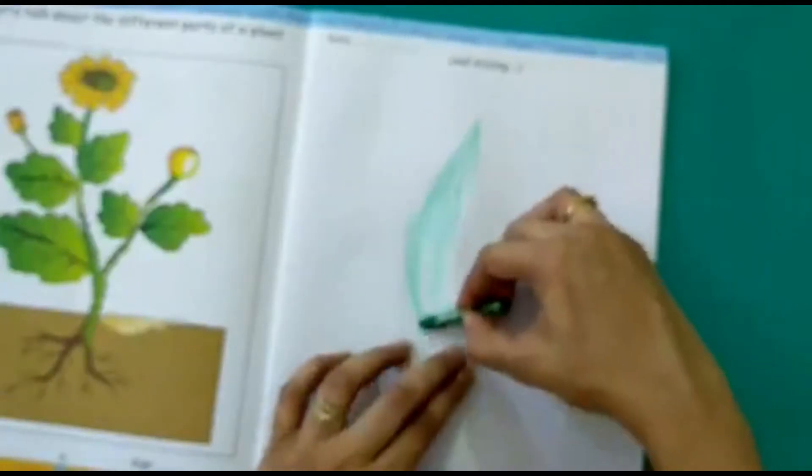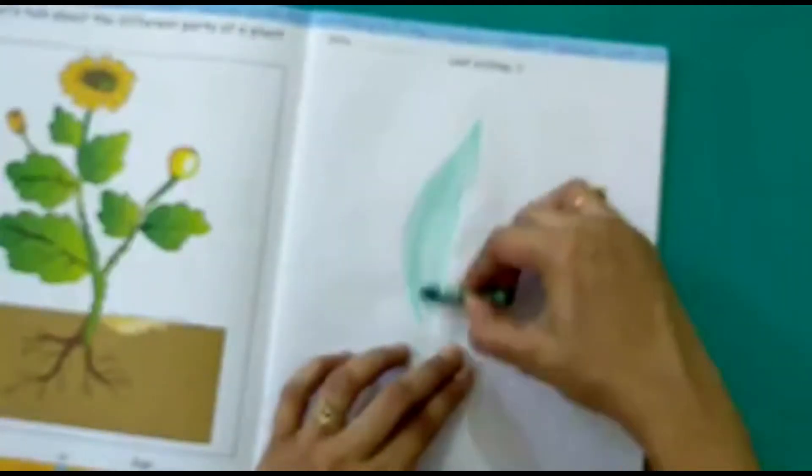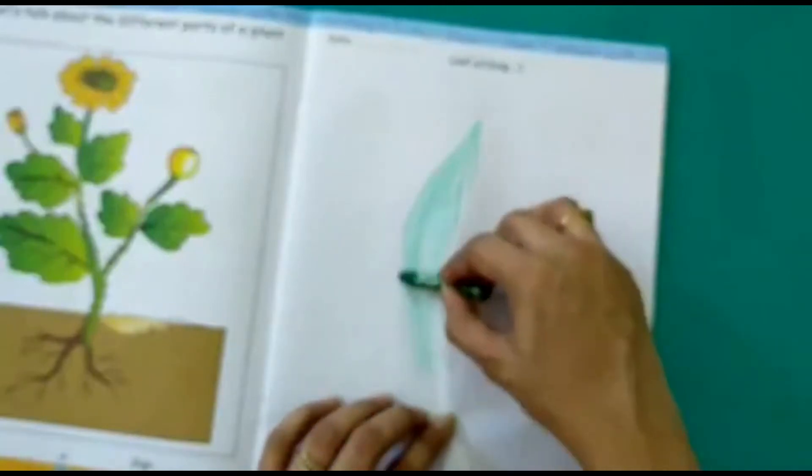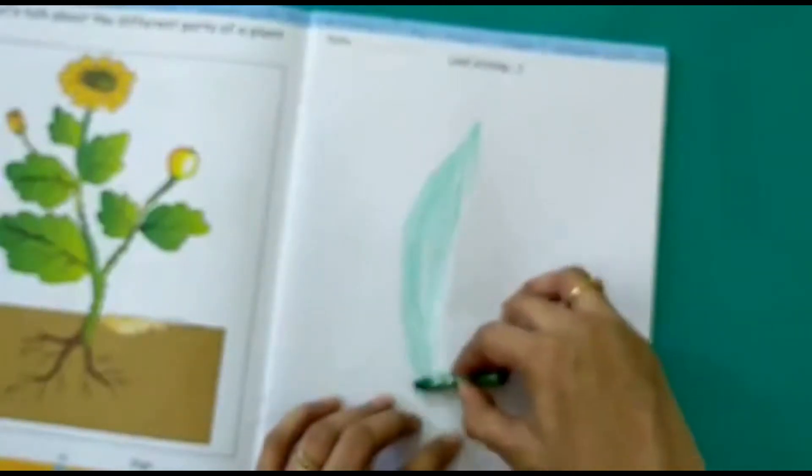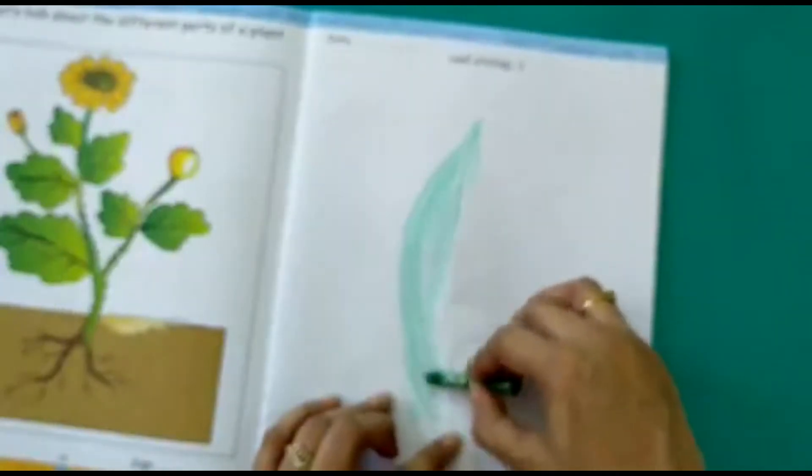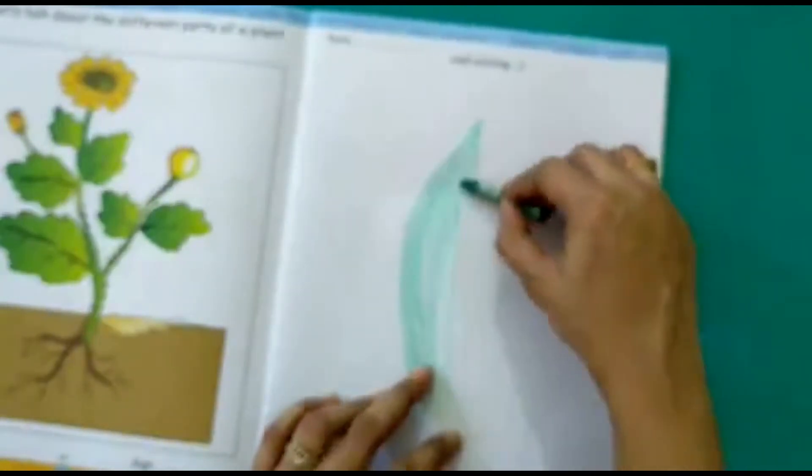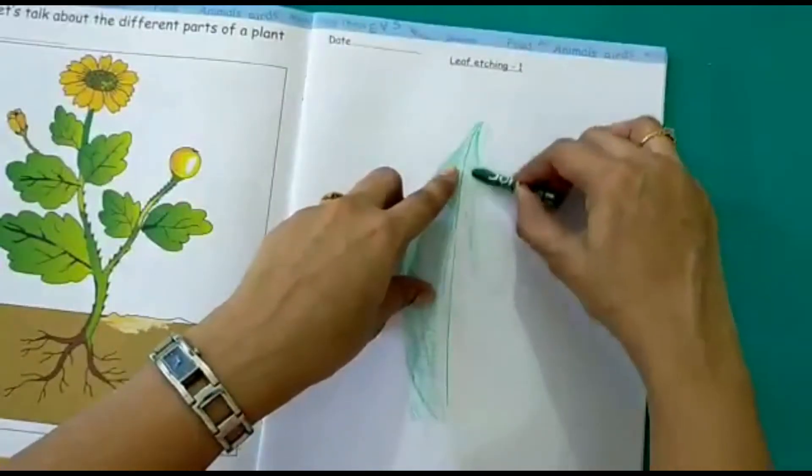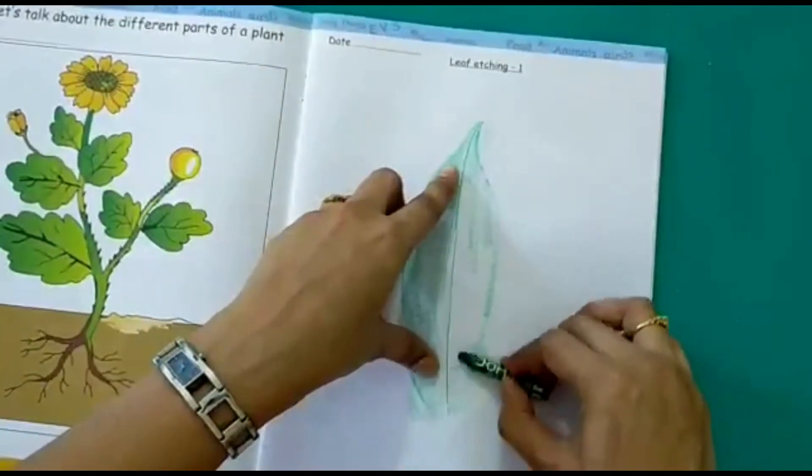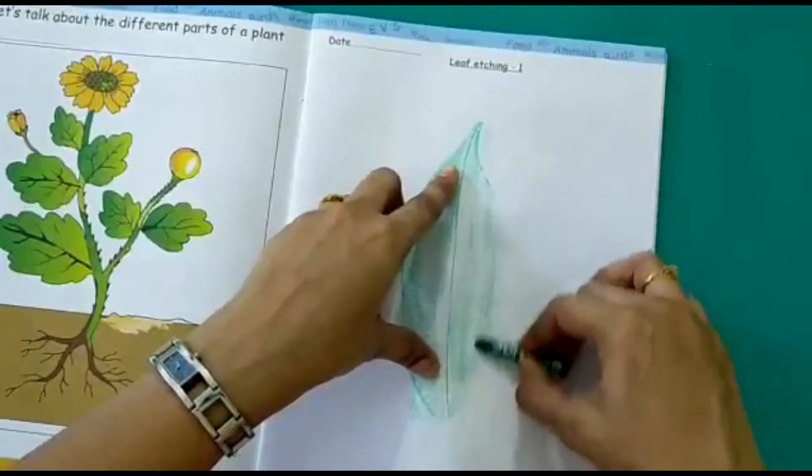What is this? You are getting the impression of a leaf here. Can you see? Yes. So you just have to run your crayon over the leaf and then you will get the impression of the leaf on our page.